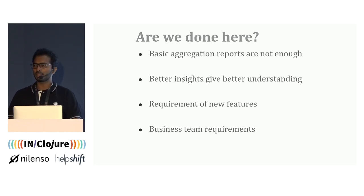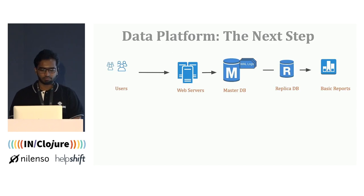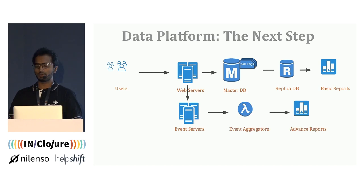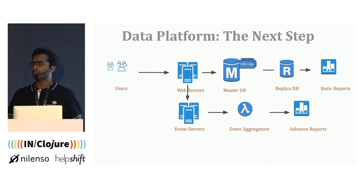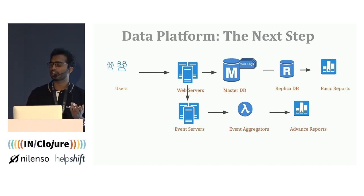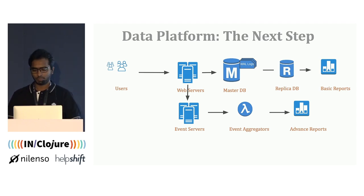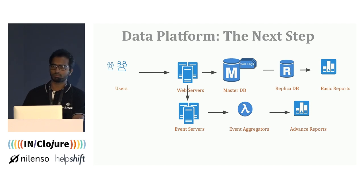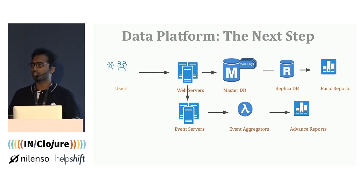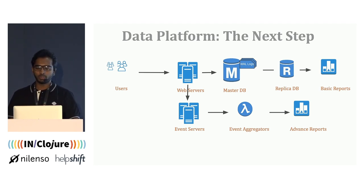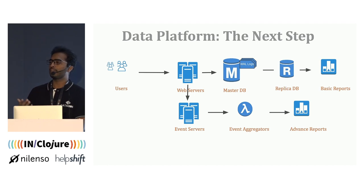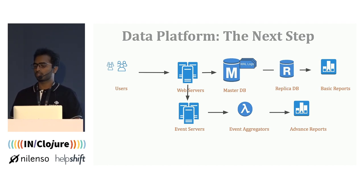The next step is having a full-fledged event-based architecture where clients send custom events to your event server. Then a huge MapReduce-based Hadoop cluster handles all the aggregations and generates advanced reports. But this whole process costs a lot in terms of money as well as time, because you need to hire data engineer experts who will set up all the big Hadoop-based infrastructure. It also affects product timelines because you have to start making changes to your code to send custom events to servers, or write an event server for that.